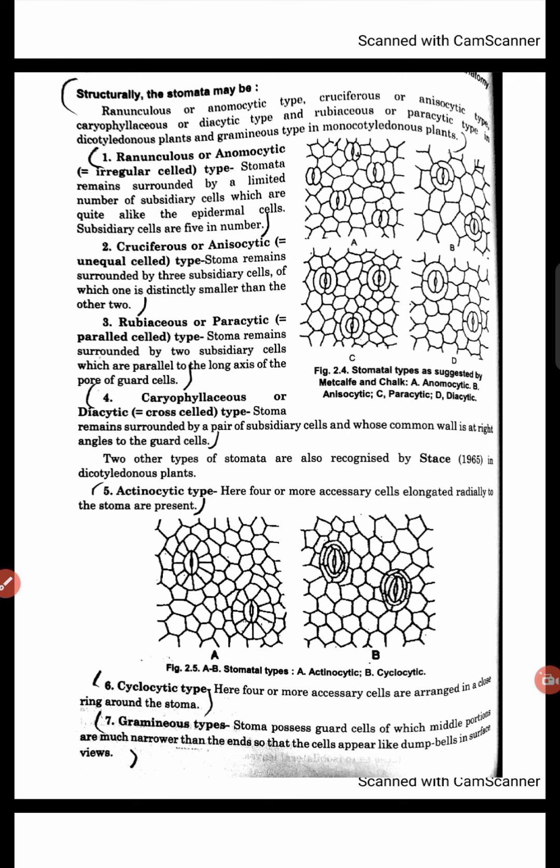Third case: Rubiaceous or Paracytic type. Here, stomata are surrounded by two subsidiary cells which are arranged parallel. Fourth: Caryophyllaceous or Diacytic. Here, stomata are surrounded by a pair of subsidiary cells with a common wall at right angles to the guard cell.